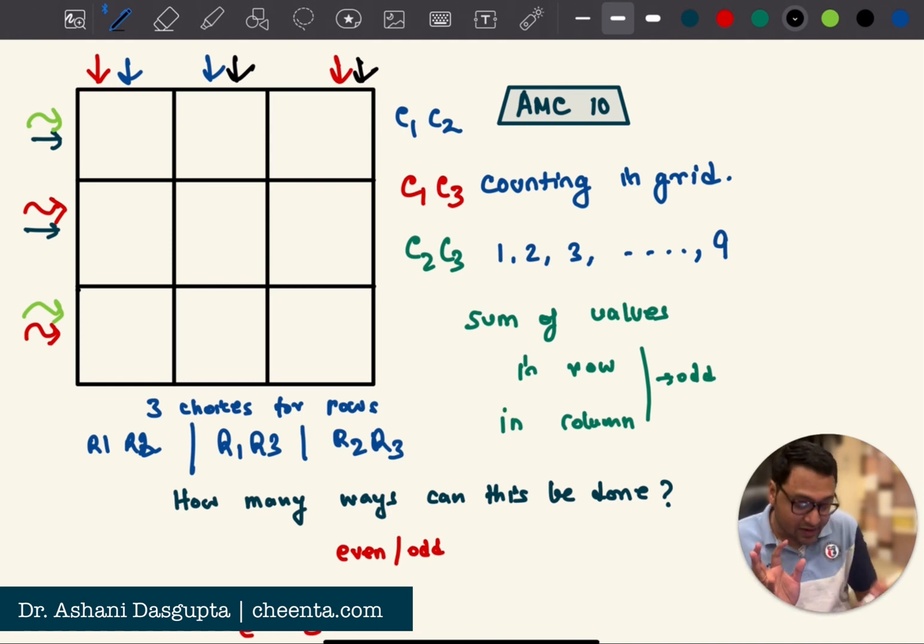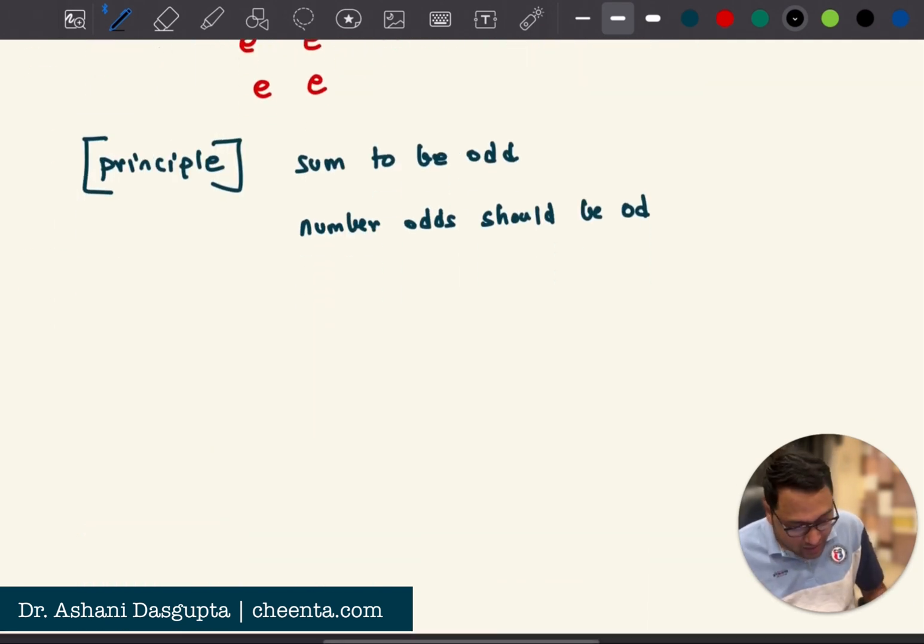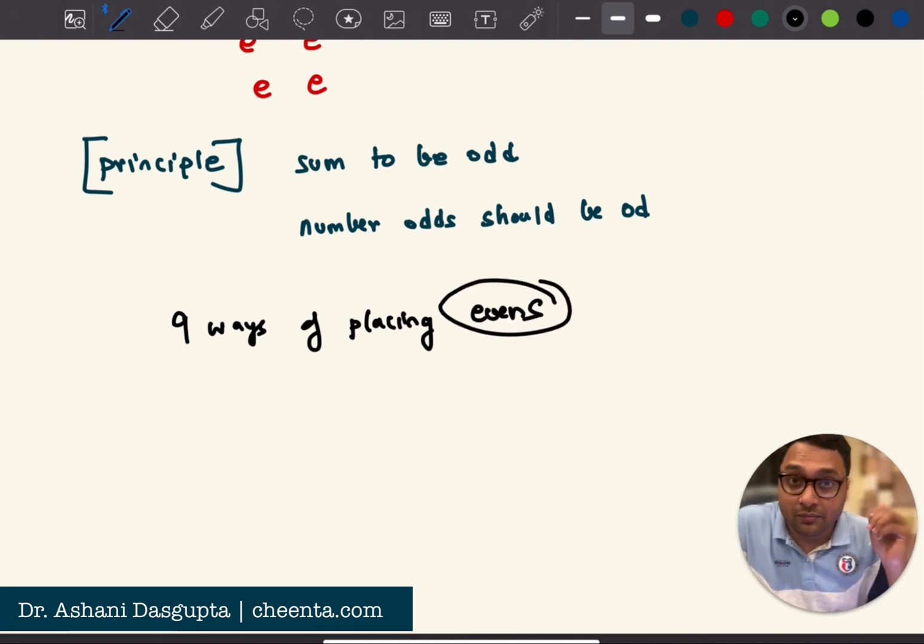Now, there are three ways here and three ways here. So the total nine ways of doing this. So nine ways of placing the even numbers. Nine ways of placing the even numbers.